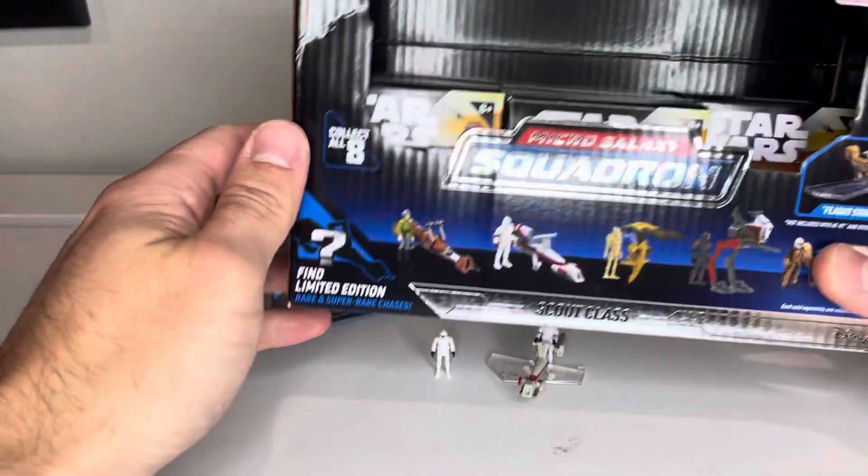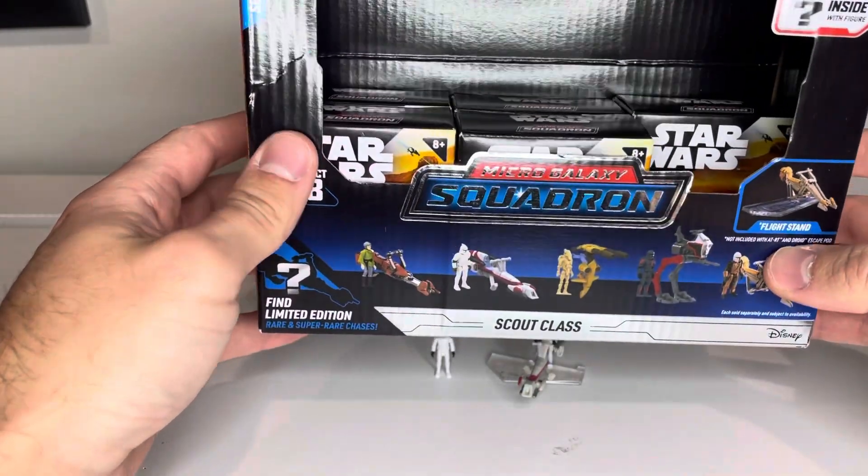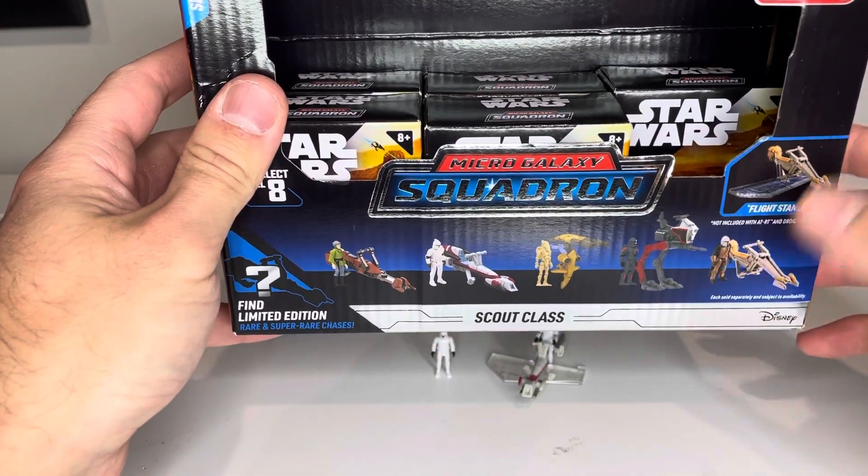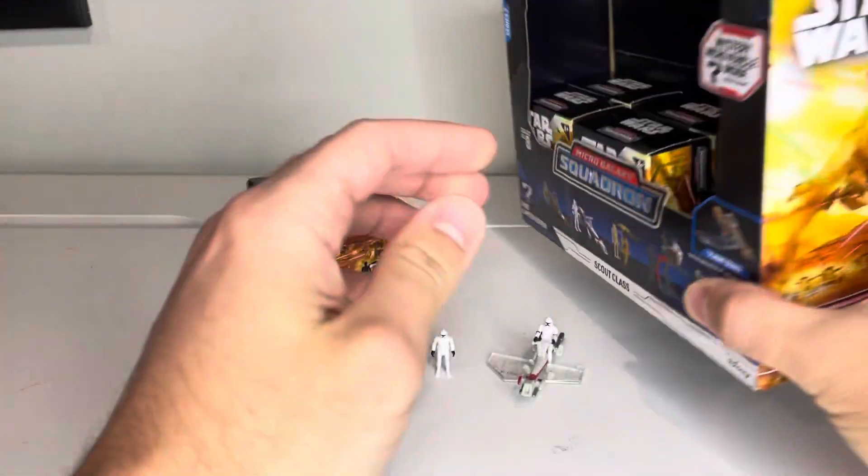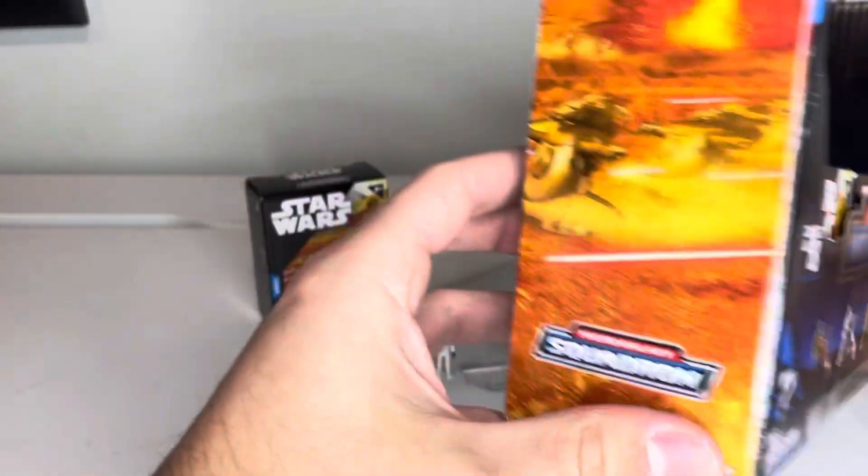Starting out with the box, here is the actual display that it comes in. I really like these boxes, the detail on it's really nice. You get all of the different options here that come in just the standard Scout class, as well as some artwork here on the side of the box.